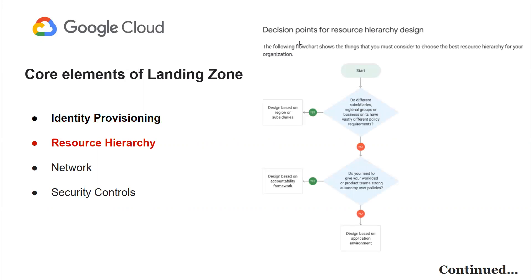The second core element is the resource hierarchy. It is a way to organize resources and group them in your GCP environment. This includes the organization of resources such as projects, folders, and billing accounts. It's important to have a well-defined resource hierarchy to ensure efficient management and organization of resources.